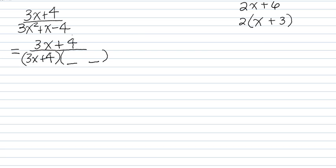So if you look at the first terms, 3x times, the only option would be x because that would give you 3x squared, which is the first term. I didn't mean to erase that.